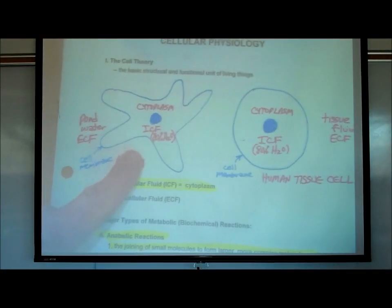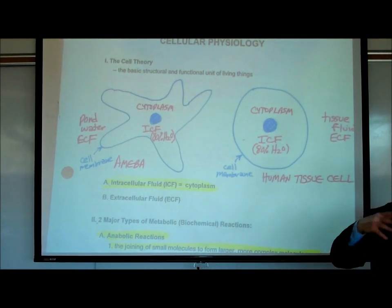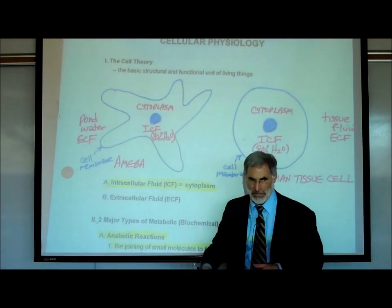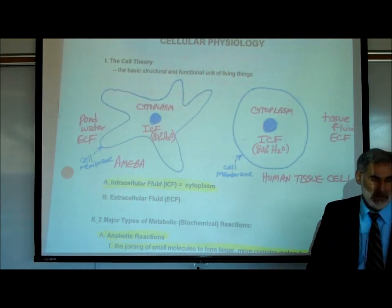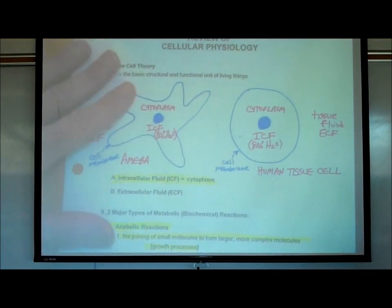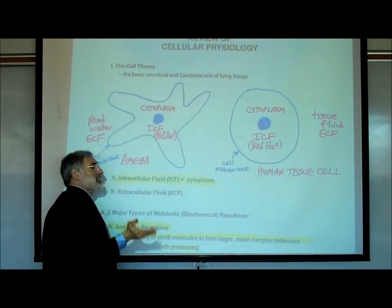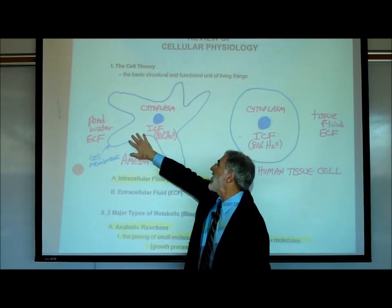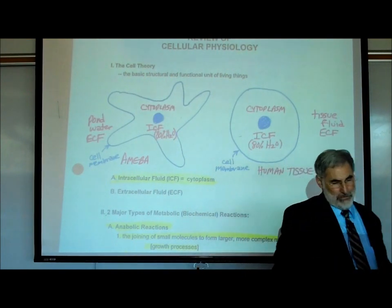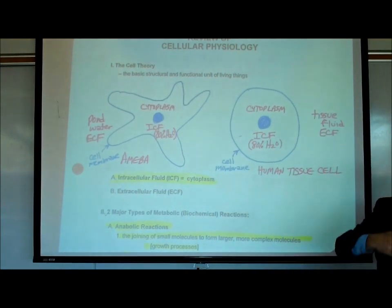I've drawn an extraordinary picture here of an amoeba and a human cell. Amoebas are these blob-like cells that live in pond water. It doesn't matter whether we talk about an amoeba or a human cell — there's a lot of similarity between the two. The cytoplasm inside the amoeba is 80% water, which is true of all cells. Since it's mostly water inside the cell, it's also known as ICF — intracellular fluid — the fluid inside the cell.